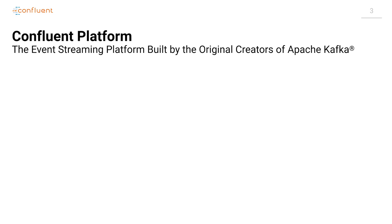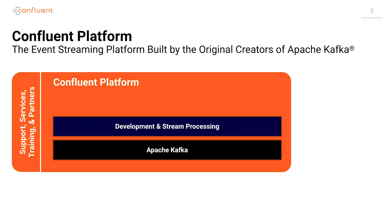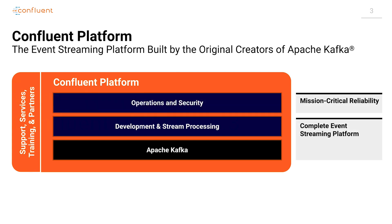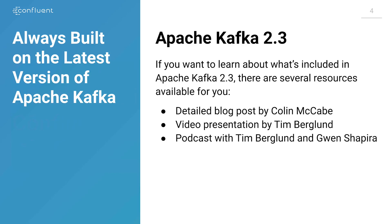To remind you, Confluent Platform is the event streaming platform built by the original creators of Apache Kafka. It's built on that solid foundation of Kafka as that core event streaming platform, with development and stream processing tools layered on top of that, and a lot of good things to help you deploy, manage, and secure Confluent Platform at scale. All of this can run on machines in your data center or machines in the public cloud. Confluent Platform is always built with the latest release of Apache Kafka — in this case, Kafka 2.3. We already have another video that breaks those features down, and there's also a great blog post by Colin McCabe that describes those things in print.